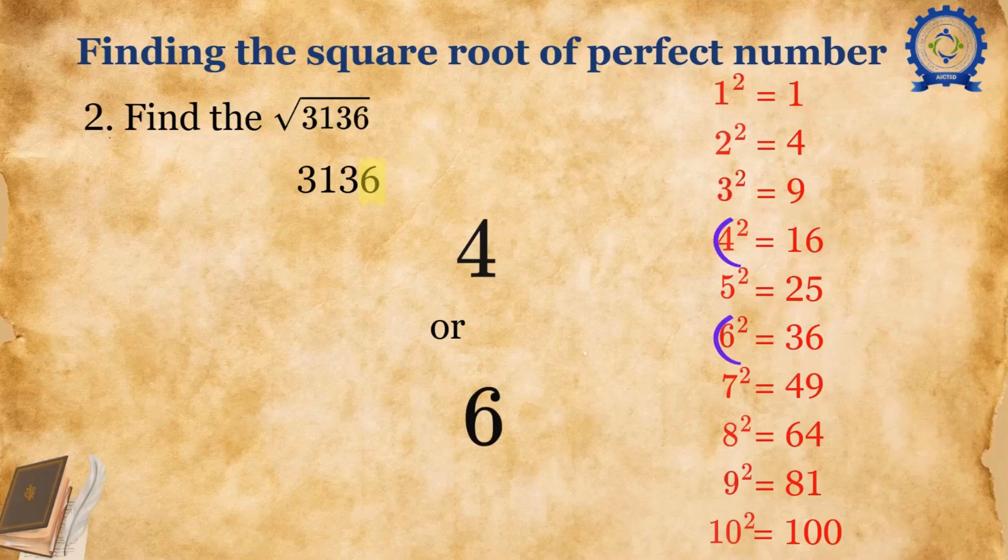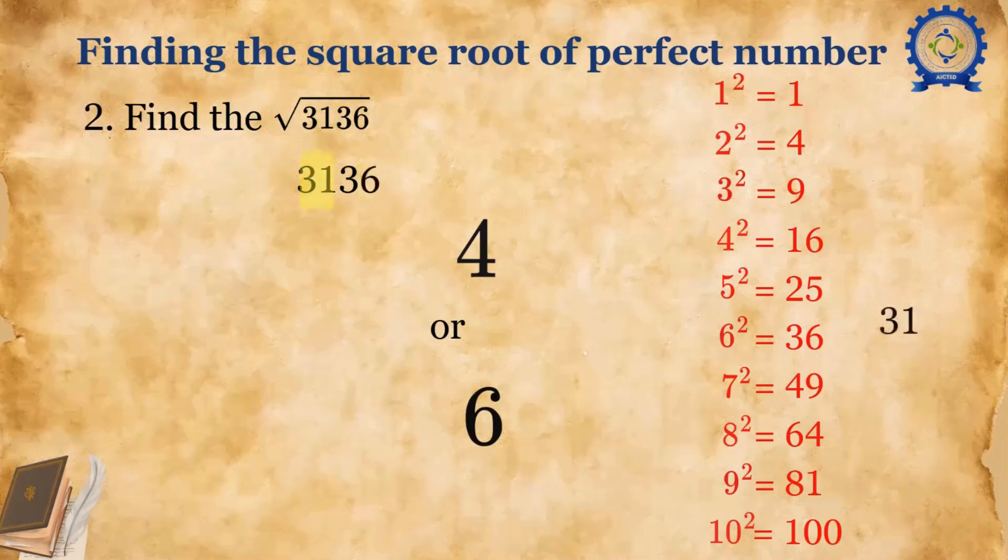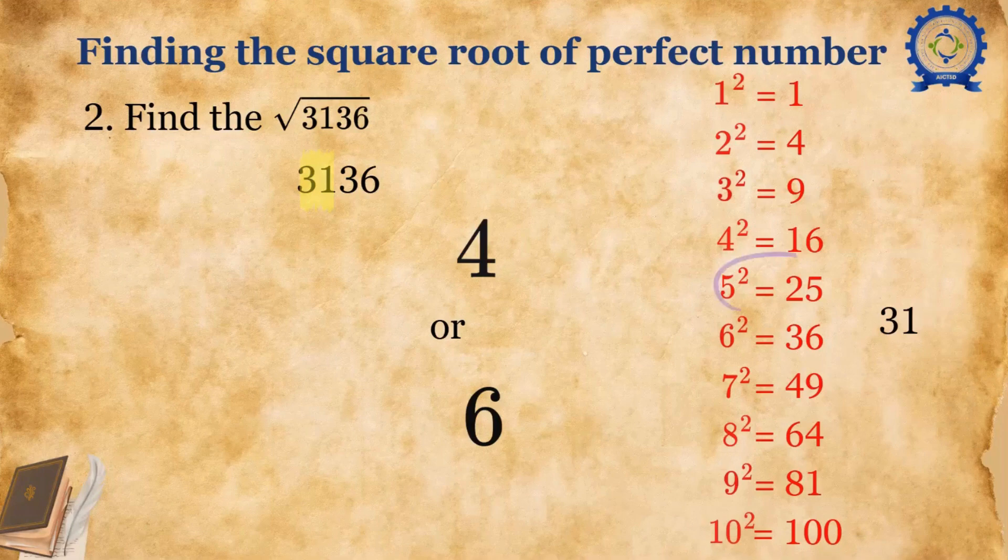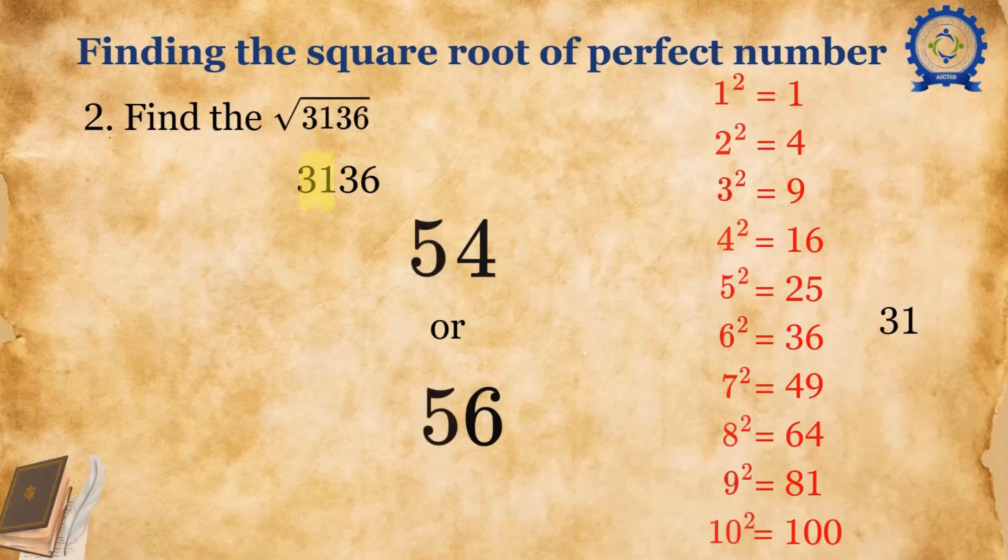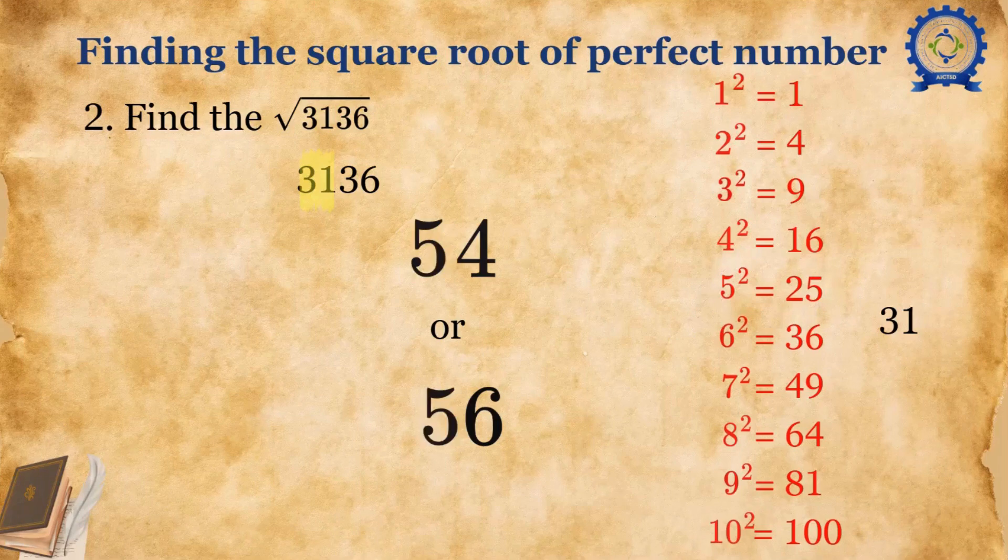Now let's consider 31. Thirty-one falls between 25 and 36. We'll take the top value, that is 5² = 25. We'll place 5 at the tens place. So now we have two possible answers: 54 or 56.